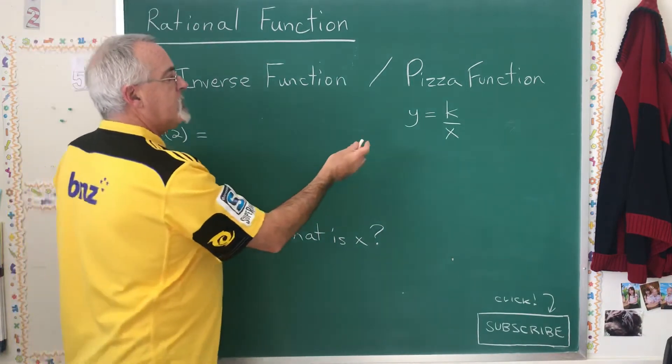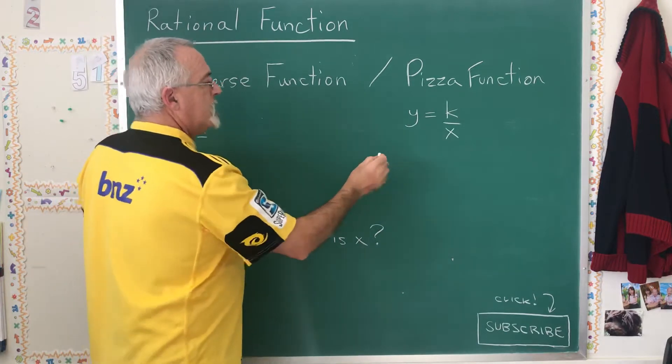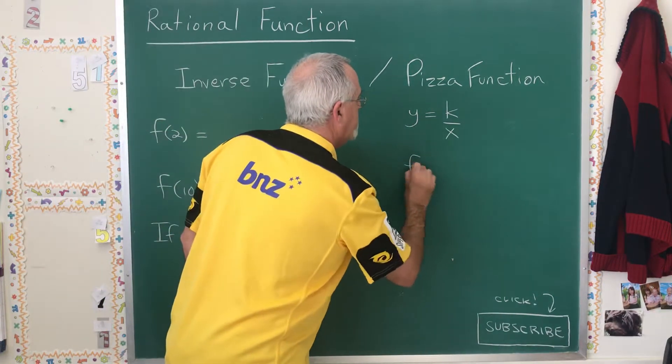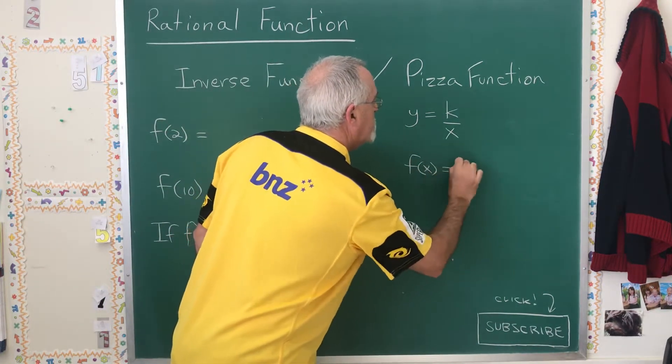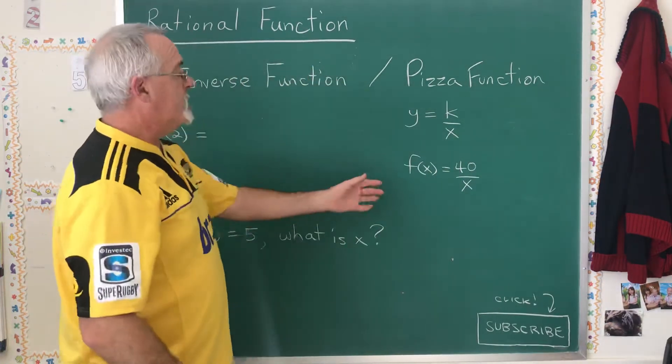But this can be expressed with function notation. So I'm going to show you the function f of x equals 40 over x. So k is equal to 40 in this case.